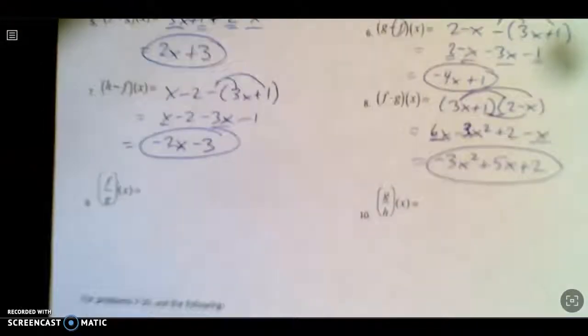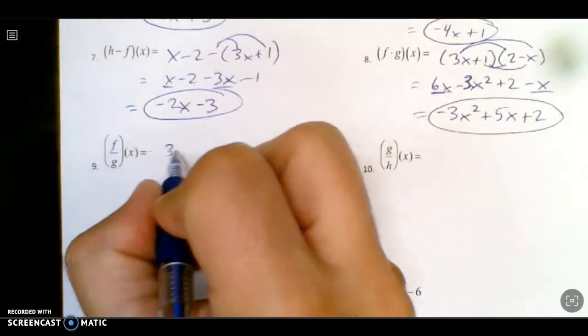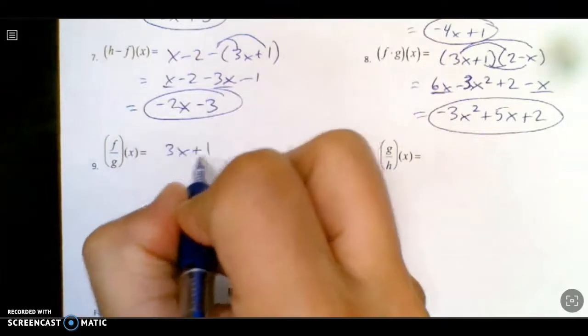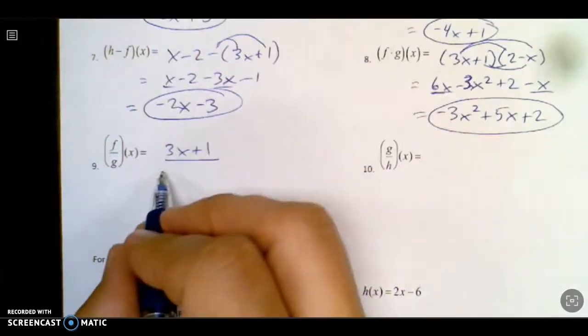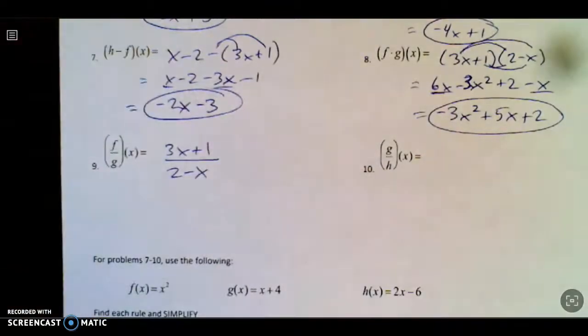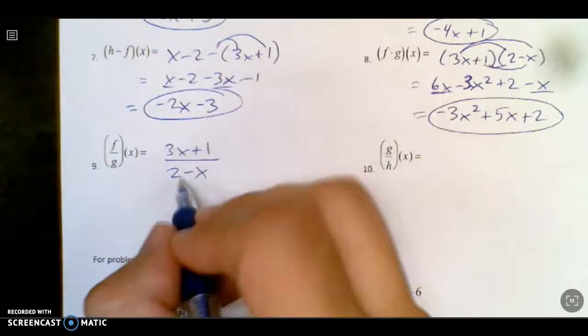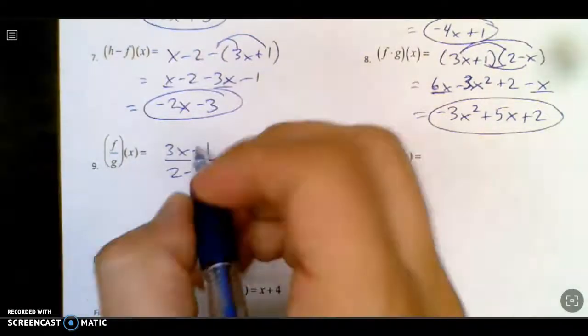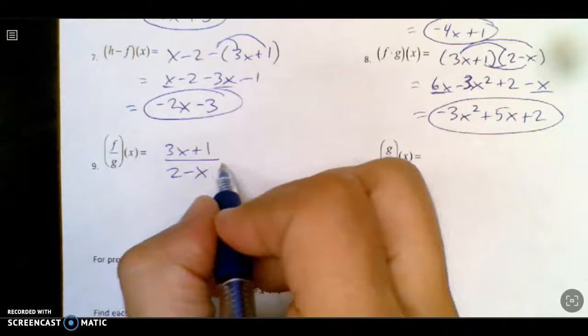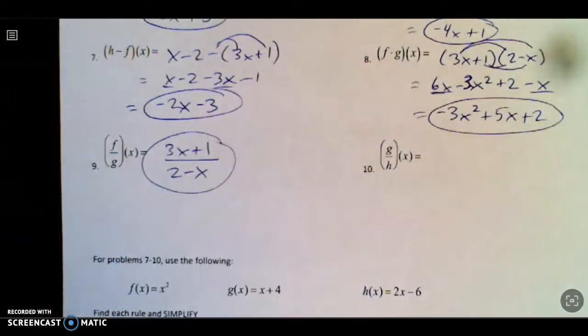So now we get to division, which is similar to the other ones, except after you write it in a fraction, you have 2 jobs left. So there's f of x, here's g of x. And your 2 jobs are 1, see if anything cancels. But it doesn't in this case. And 2, state a domain restriction.